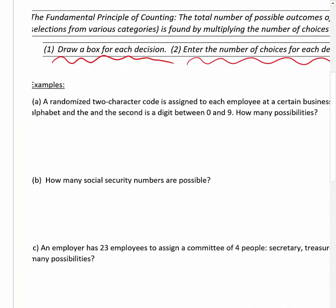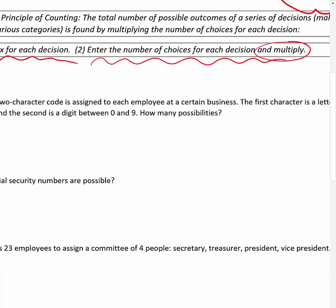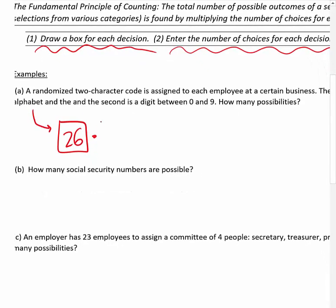For part A: a randomized two-character code is assigned to each employee at a certain business. The first character is a letter of the alphabet - there are 26 letters. The second digit is between 0 and 9, which is actually 10 digits (1 through 9 is 9, plus 0 makes 10). So how many possibilities? Multiply them together: 260 total.